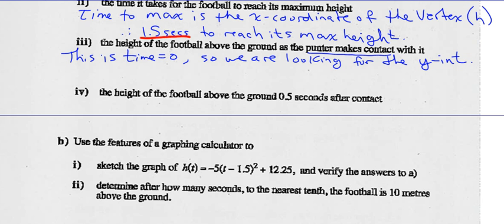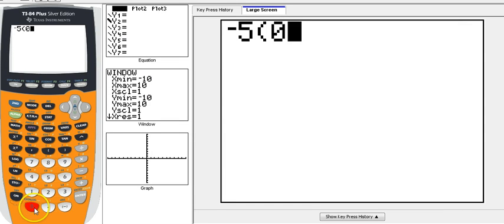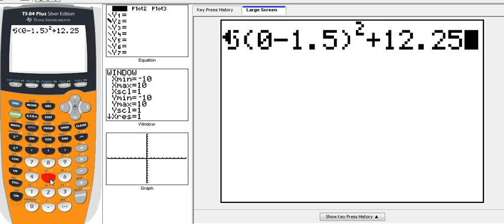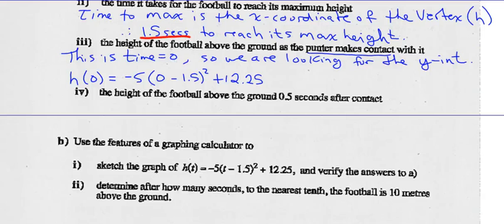That occurs when t is 0. So in our equation, h(t), well, t is now 0, is negative 5 times (0 minus 1.5) all squared plus 12.25. So we work this thing out. You can use your calculator to figure that out. Negative 5 times (0 minus 1.5) all squared plus 12.25. And we get a value of 1. So the height at time 0 is 1 meter.